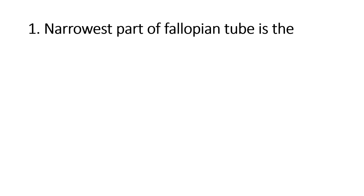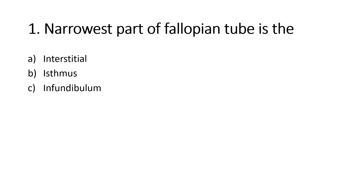The narrowest part of fallopian tube is: Option A, Interstitial; Option B, Isthmus; Option C, Infundibulum; Option D, Ampulla. Right answer is Option A, Interstitial. The interstitial (intramural) part is the first part of the fallopian tube.